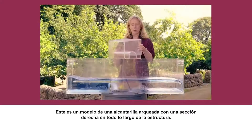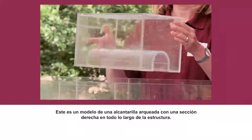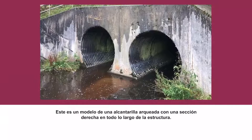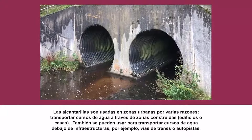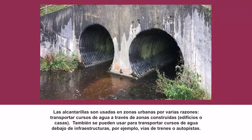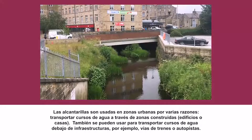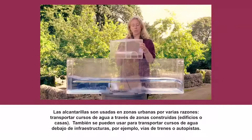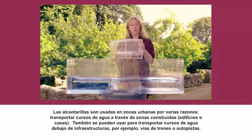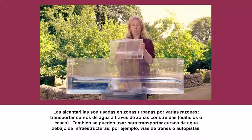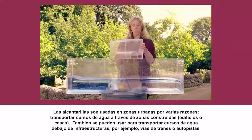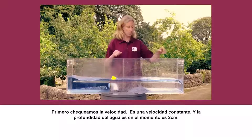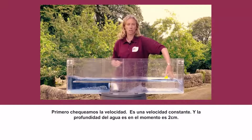This is our model of a culvert. It's an arched culvert with a straight section throughout it. Culverts are used for various different reasons in built-up areas. They can transport watercourses underneath built-up areas, whether it's houses or buildings. They can also be used to transport watercourses underneath infrastructure, for example railways and roads. First of all we're going to check the velocity and we can see it's a nice constant velocity.